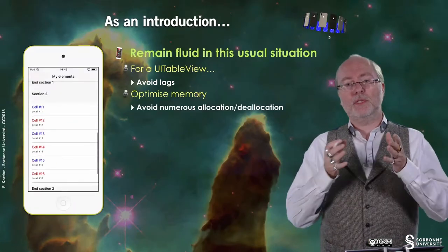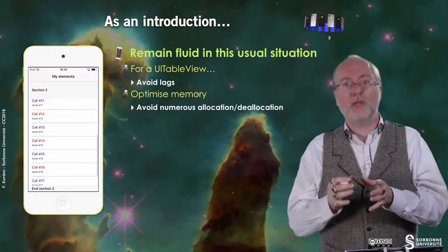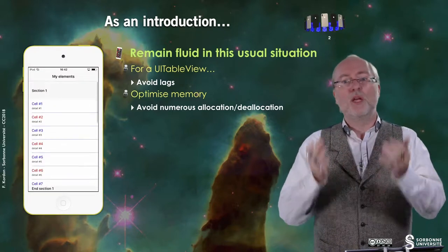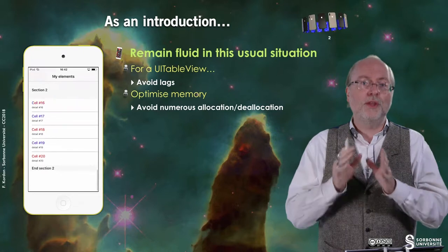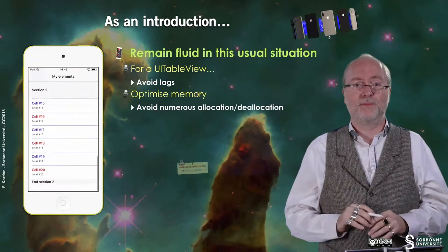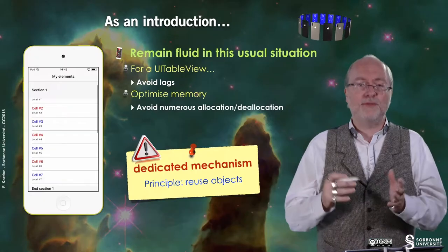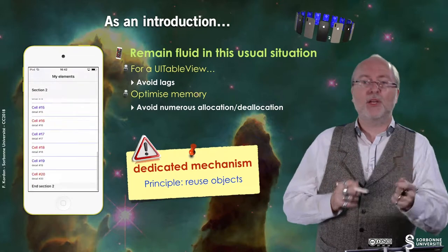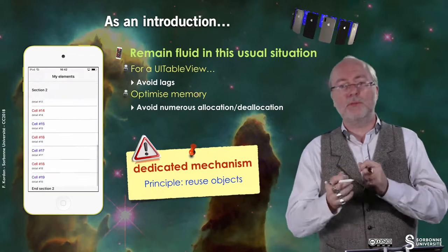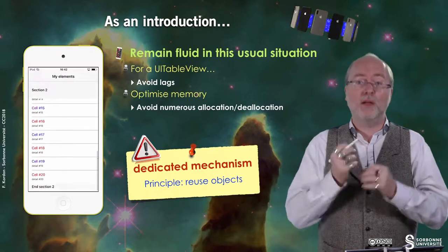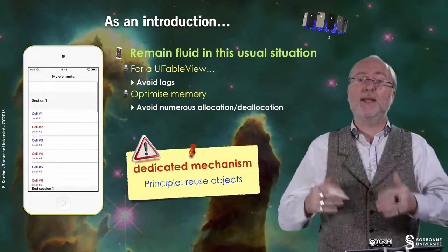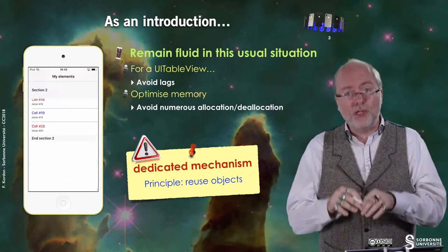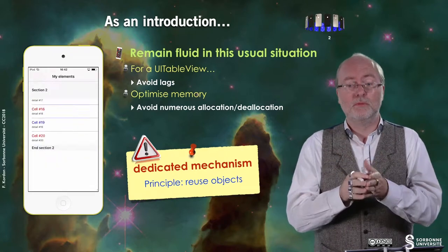There is an embedded mechanism and you have to use it to fit these two objectives. The principle of this mechanism is to reuse objects. This will save a lot of allocation and deallocation cycles, because every time you allocate or deallocate you have to look for memory, which involves not only memory but also CPU. So the idea is to reuse cells.